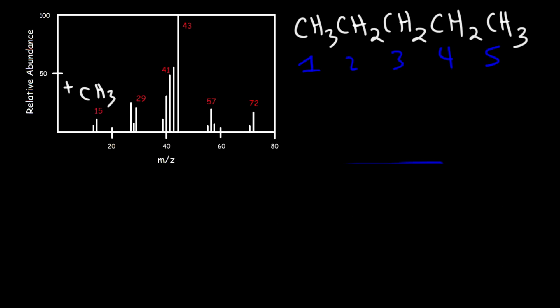The peak at 43 is known as the base peak. It has a relative abundance of 100 percent, so everything is compared to the base peak.